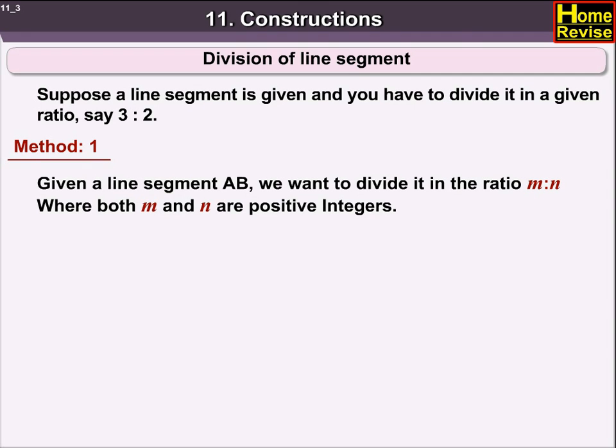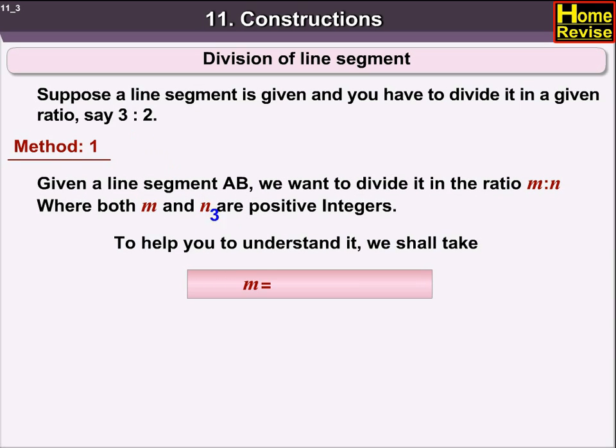Construction: given a line segment AB, we want to divide it in the ratio M is to N, where both M and N are positive integers. To help you understand it, we shall take M is equal to 3 and N is equal to 2.